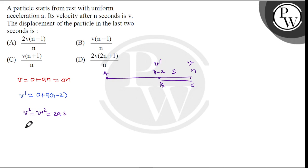v square value is a times n whole square. v dash value is a times (n minus 2) whole square equals 2as. This will be a square n square minus this will be a times n square plus 4 minus 4n equals 2as.